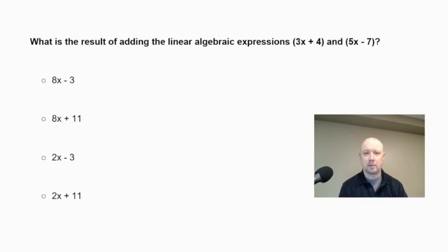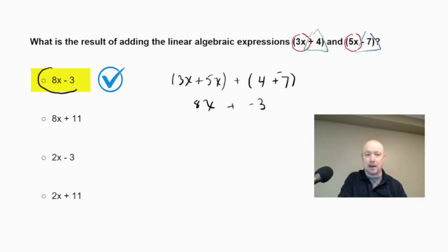What is the result of adding the linear algebraic expressions 3x plus 4 and 5x minus 7? When we combine algebraic expressions, we are combining like terms. We have 3x, which is a like term to 5x, and we have a constant positive 4, which is a like term with negative 7. So we combine 3x and 5x to get 8x, and then positive 4 minus 7 is the same as 4 plus negative 7, which gives us negative 3. So our answer is 8x minus 3.